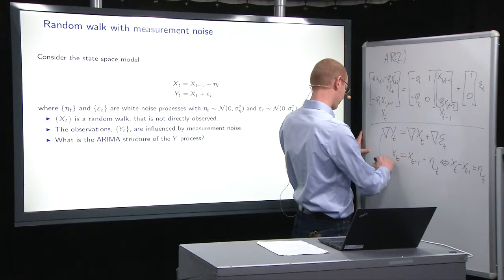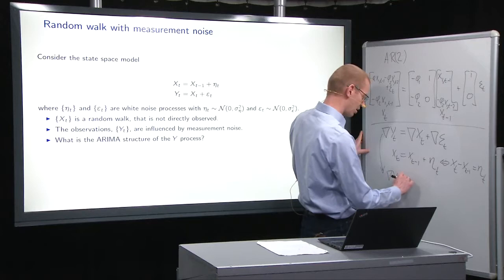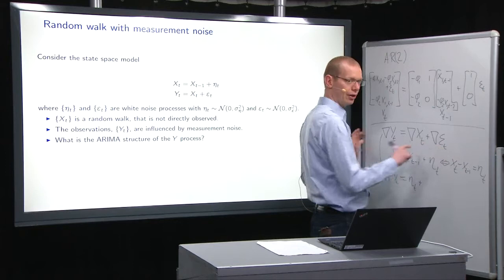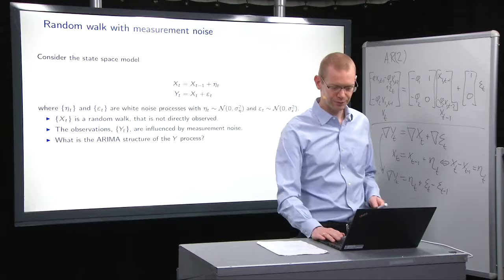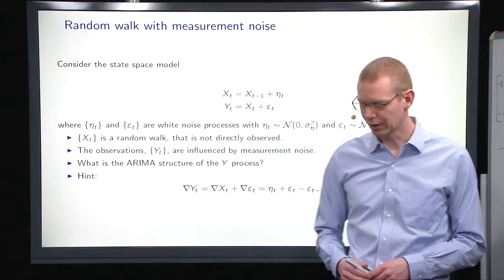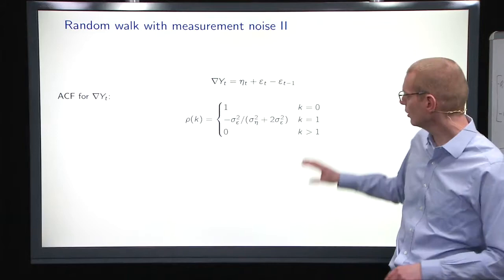So that means that what we have up here is then that the difference operator on Yt is equal to ηt plus the difference operator on εt, which is εt minus εt minus 1. So now I believe we've got part of the way. That's what we have up here.